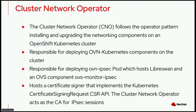Another important piece of software is the Cluster Network Operator, or CNO. It follows the operator pattern, and it's the software that installs and upgrades networking components on an OpenShift cluster — responsible for deploying OVN-Kubernetes and all its components, including deploying the OVN IPSec pod, which hosts the LibreSwan software and an OVS component called OVS Monitor IPSec. The CNO is also responsible for hosting a certificate signer — a piece of software implementing the Kubernetes certificate signing request API — meaning the CNO can act as a CA for the IPSec sessions.